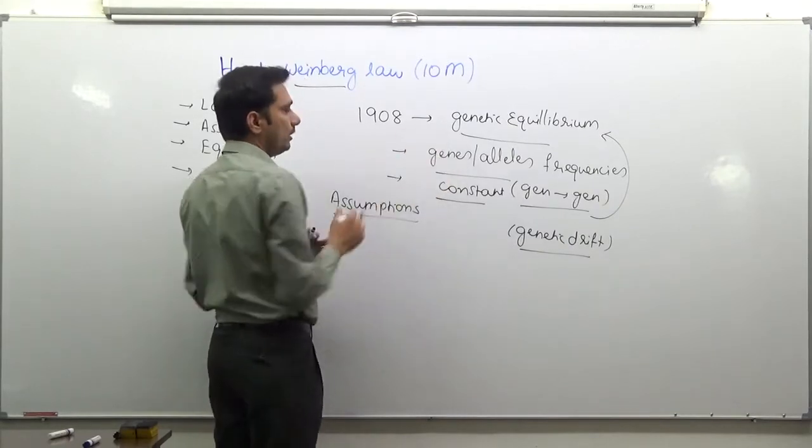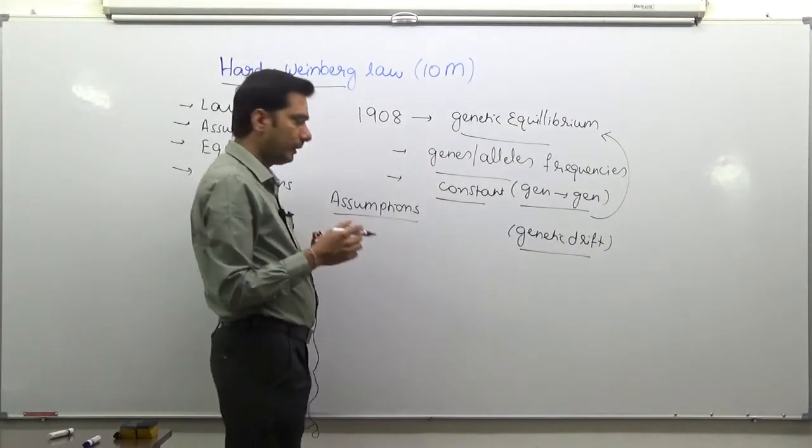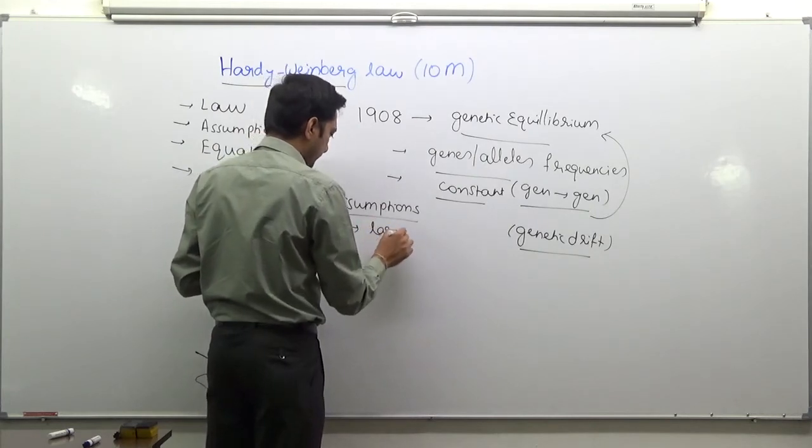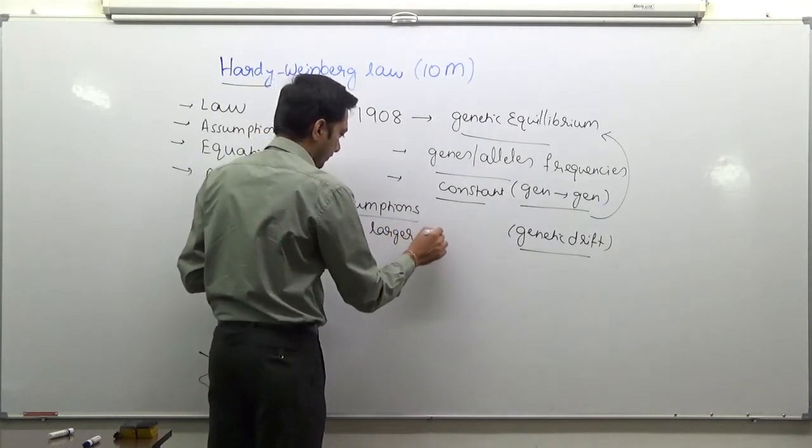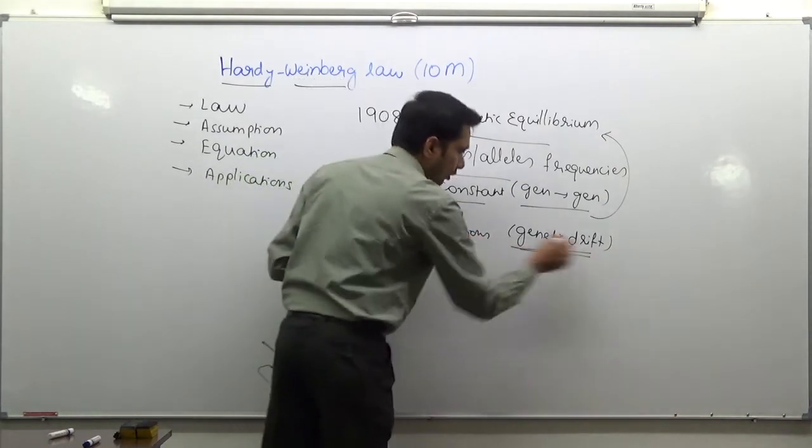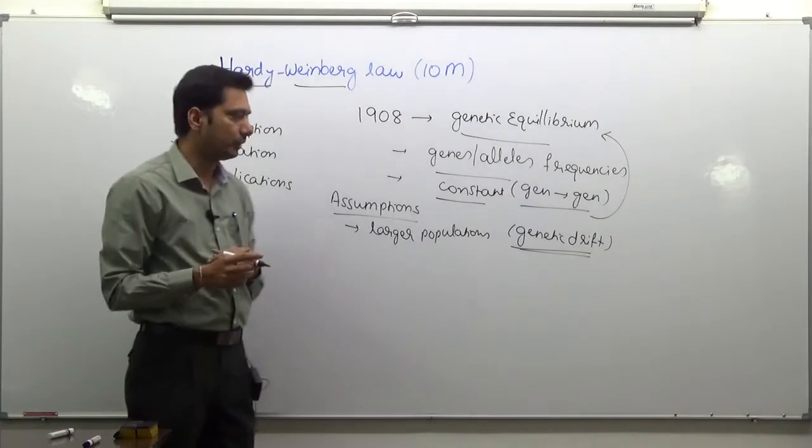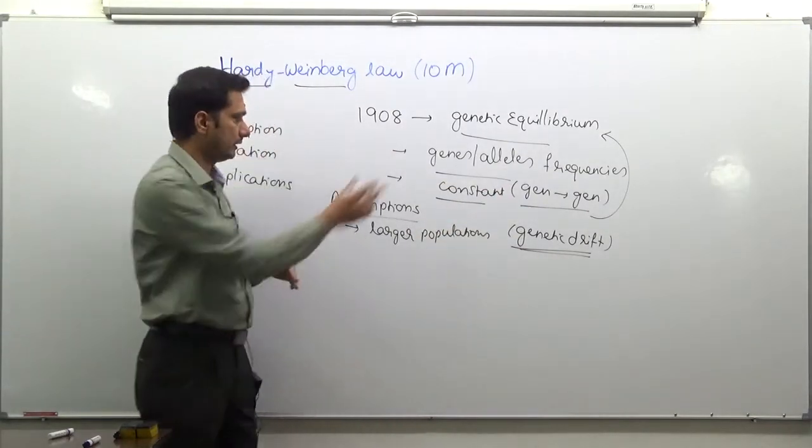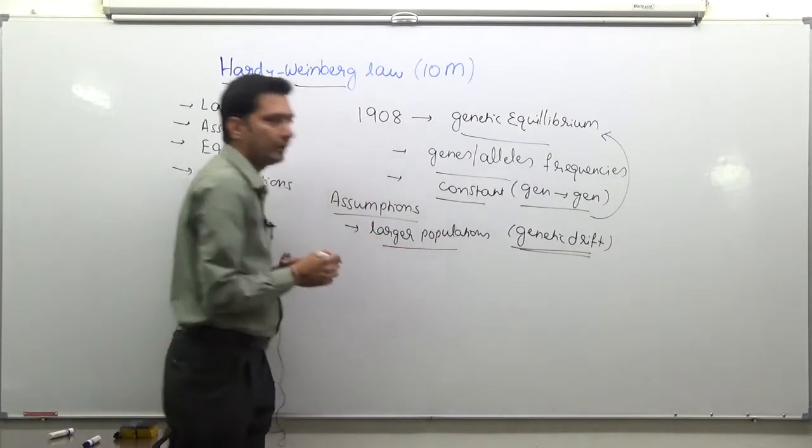For this law to follow or to operate, we actually need larger populations where genetic drift is low. You do not notice the change in the frequencies because of the genetic drift. So this law only operates in larger populations.